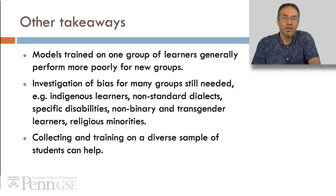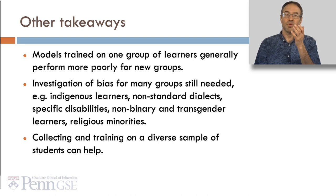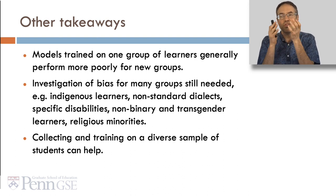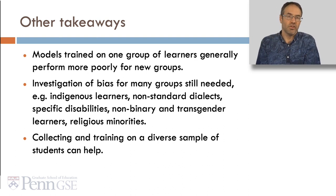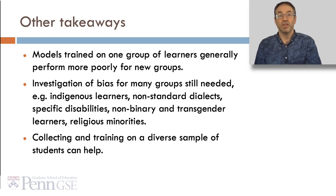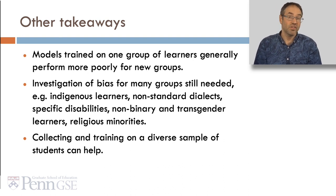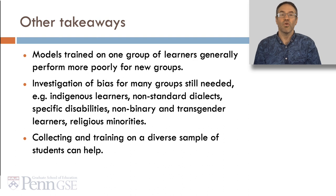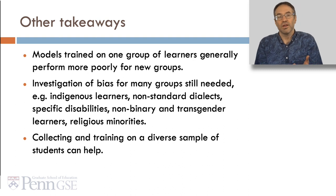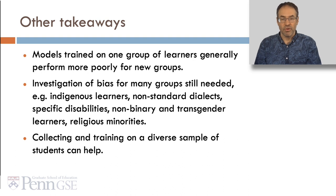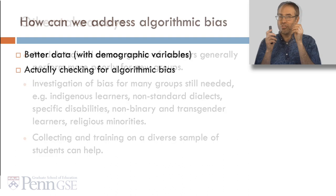Other takeaways from our survey: Models trained on one group of learners generally perform more poorly for new groups — not surprising. There's been relatively little investigation of bias for many groups; I only know of one study involving Indigenous learners as of this recording, and none involving non-standard dialects, specific disabilities, non-binary and transgender learners, or religious minorities. We need to know who's being impacted, and how and when. And we know that if we collect and train on a diverse sample of learners, our models are less biased.